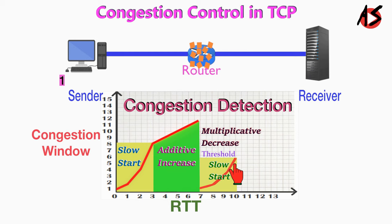In this way, TCP controls congestion by adjusting the transmission rate. I am sure you are now clear about how TCP controls congestion. Thanks and see you in the next video.